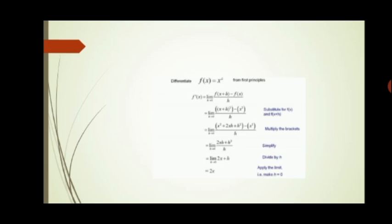From this, the general rule is derived: the differentiation of xⁿ is n·x^(n−1), which can also be derived using first principle. Now let us look at some basic derivative rules. First is the constant rule: the differentiation of a constant is zero.